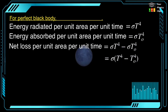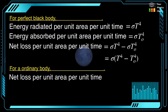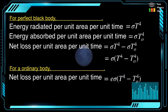The net loss of energy per unit area per unit time for a perfect black body is sigma times (T to the power 4 minus T-naught to the power 4). For an ordinary body, the net loss of energy per unit area per unit time equals e times sigma times (T to the power 4 minus T-naught to the power 4), where e is the extra emissivity factor.